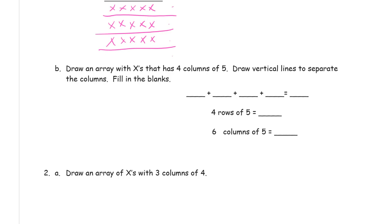Draw an array with X's that has four columns of five and draw vertical lines to separate the columns and fill in the blanks. Okay four columns of five. So by four columns of five I'm gonna draw one column of five first.